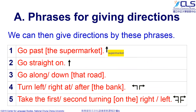Phrase number 5 is used when there are two turnings. Then, we need to identify whether it is the first turning or the second turning. So, for example, you can say, 'Take the second turning on the right,' or 'Take the first turning on the left.'